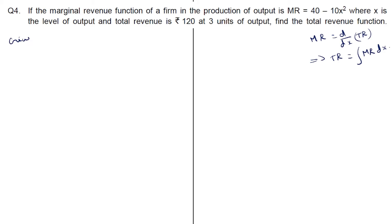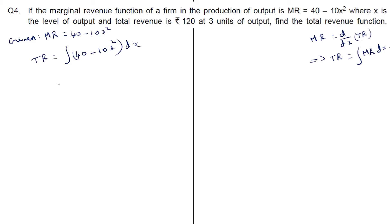Given marginal revenue equals 40 minus 10x squared, total revenue is integral of (40 minus 10x squared) dx. Integrating, we get 40x minus 10x cubed by 3 plus constant k.